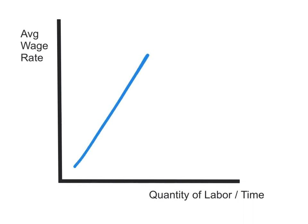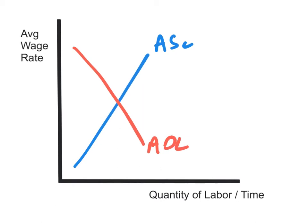If we merge those components together, so far we have a supply of labor and an aggregate demand for labor. And we're also going to have something called TLF — total labor force. Total labor force represents that as the wage rate rises along this axis, more people join the labor force. You can see this curve has some slope to it — it's pretty inelastic. But as wages go up, people who may not have been in the labor force, who may have become discouraged workers or retired, may be willing to come back and rejoin the labor force.